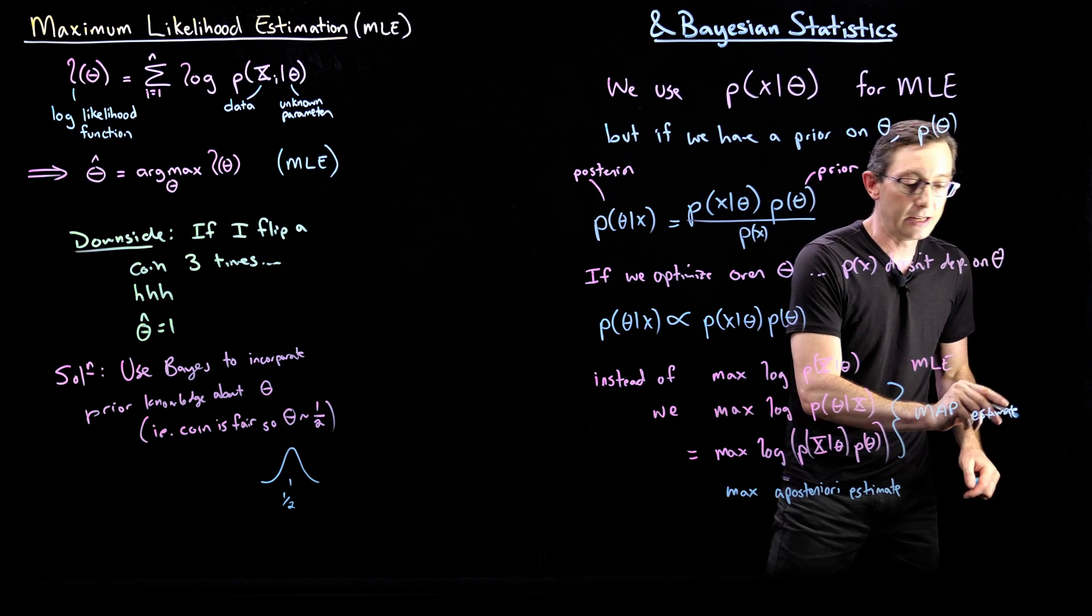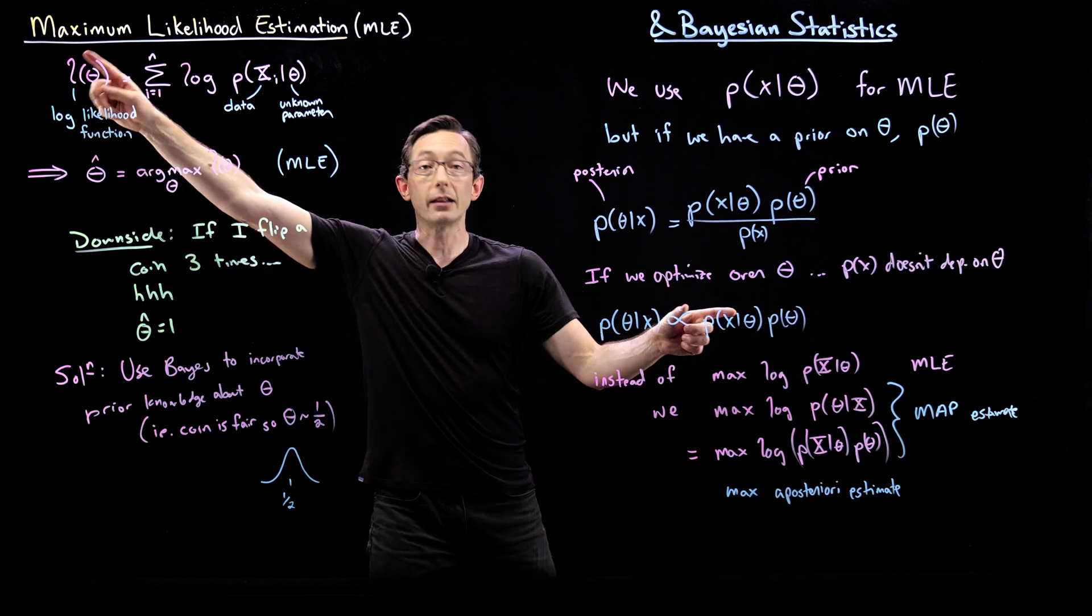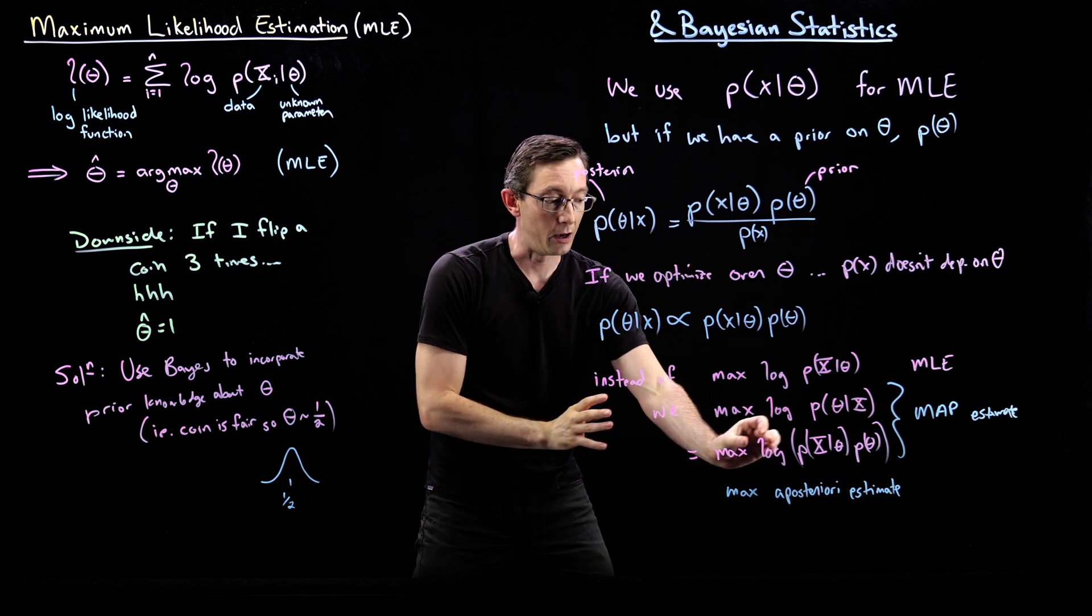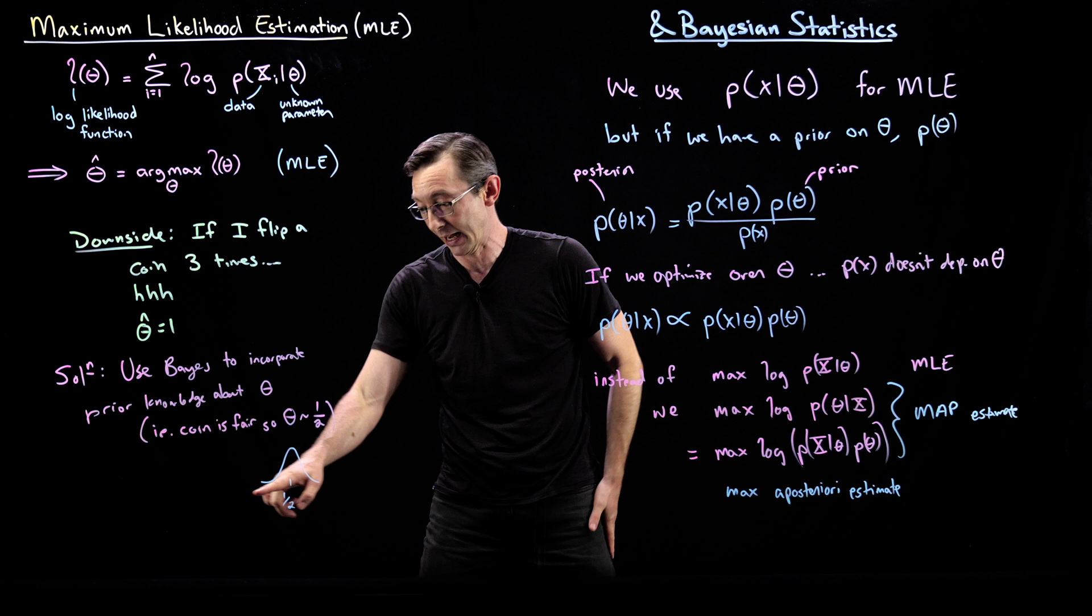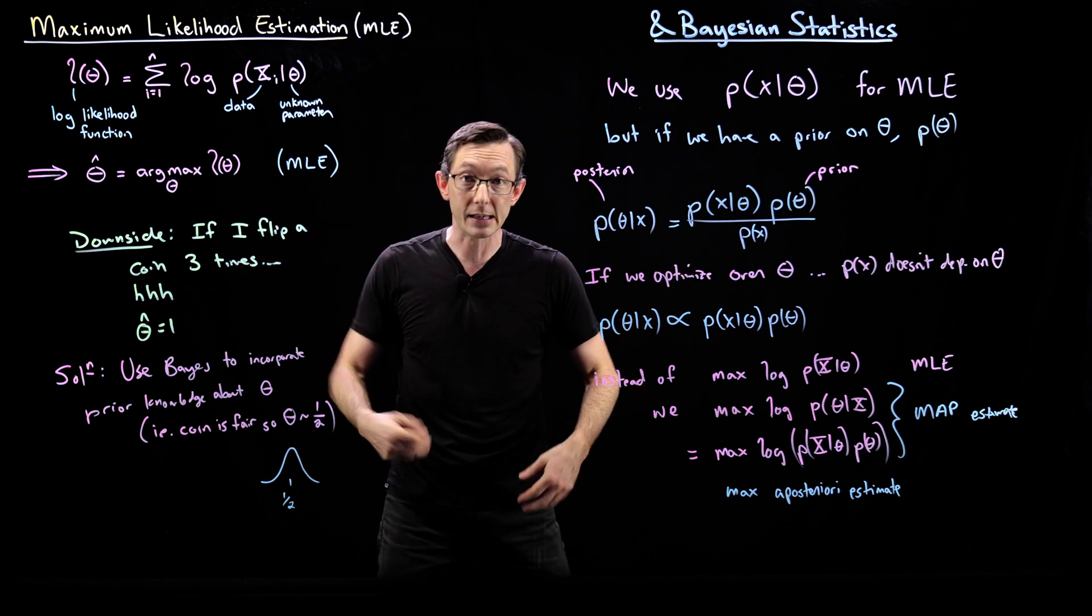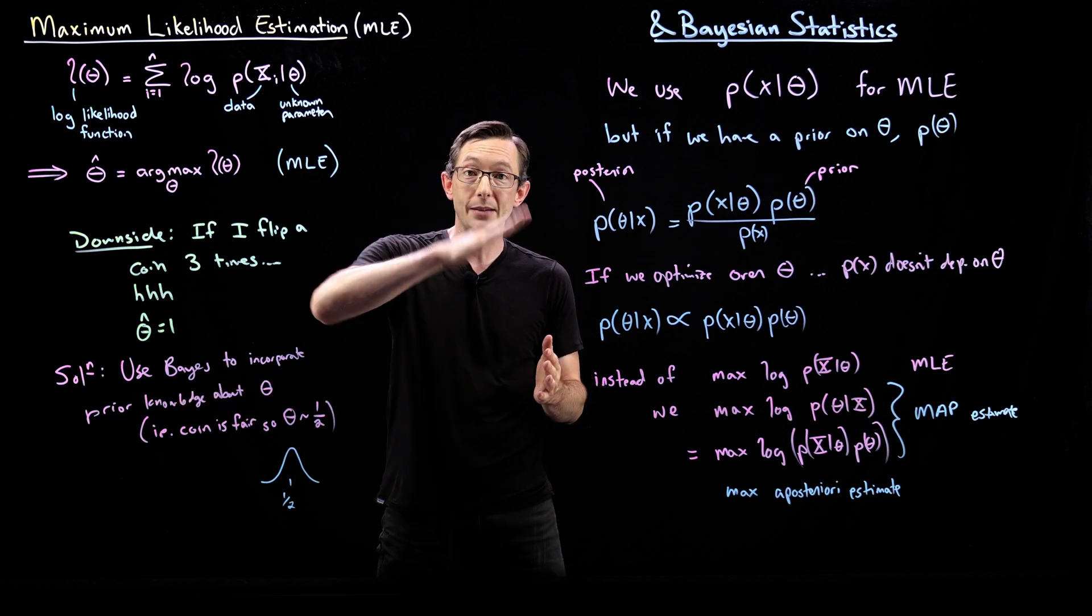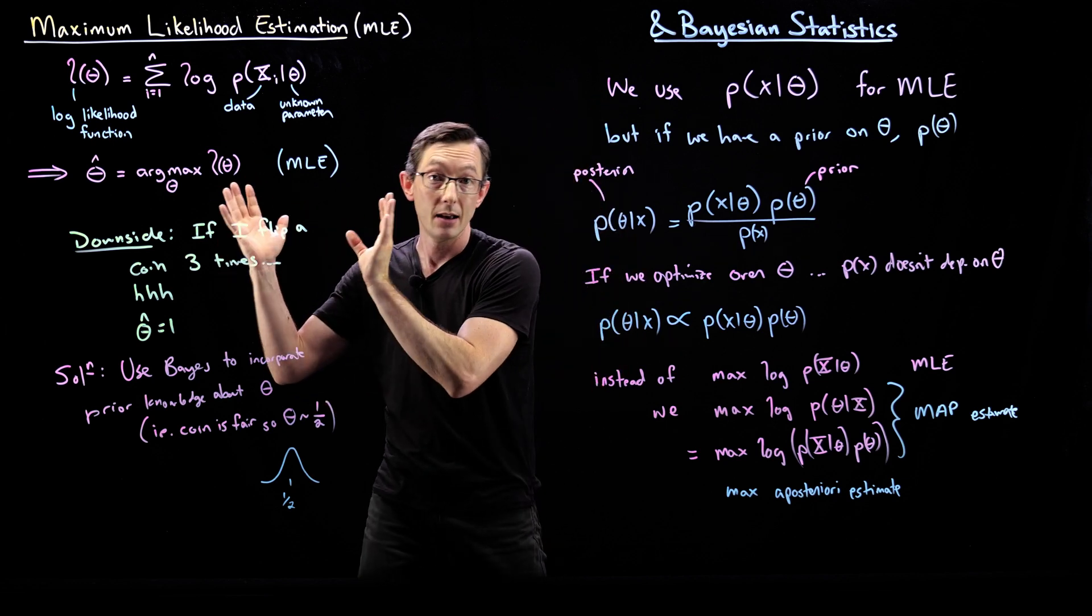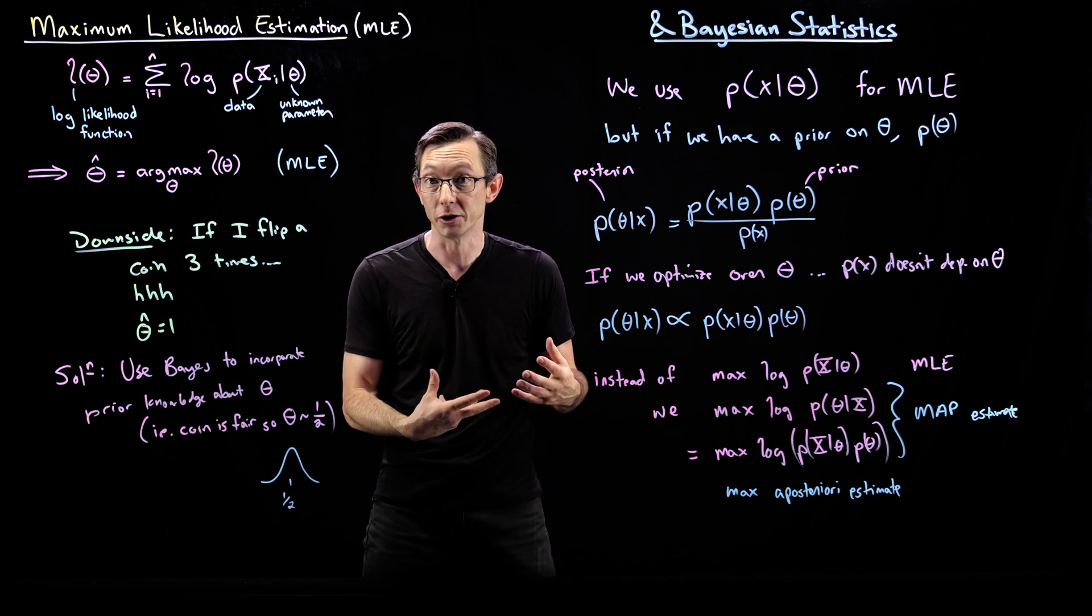Because essentially what we've done is we have replaced the likelihood function, the log likelihood function in the MLE, with a slightly more informative log likelihood function that's being informed by the prior knowledge on theta. In this case, that I think my coin is a fair coin. And we can code this up. We're actually going to do examples for coin flips and this exact example. And also for a least squares estimation, trying to estimate the slope of a scatter of data points using maximum likelihood estimators.